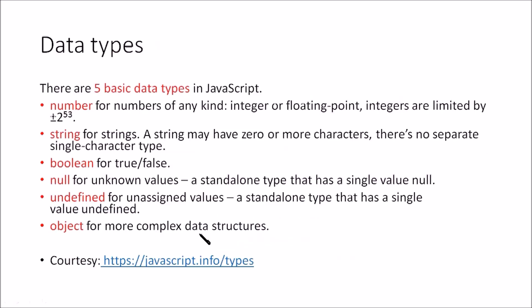There are mainly five basic data types available in JavaScript: number, string, boolean, null, and undefined. There is also a complex type data structure available — the object type. Number is used for integers as well as floating point numbers. String is mainly used for characters and strings. Boolean is true or false. Null is used for assigning a null value. Undefined means a variable has been declared but not assigned any value. Object is a complex data structure that will be detailed in the next video lectures.